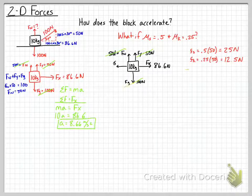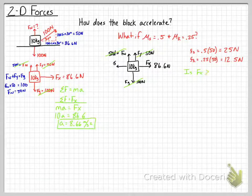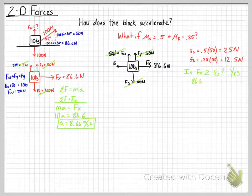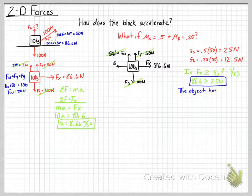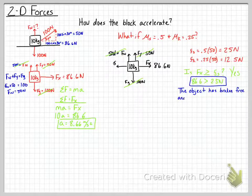Knowing the vertical components cancel out, we ask: is the net force in the x direction greater than or equal to static friction? The answer is yes — 86.6 newtons is greater than 25 newtons, so the object is in motion. That means kinetic friction applies. We ignore static friction and use kinetic friction now that the object has broken free.